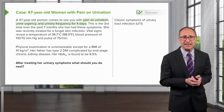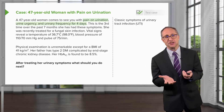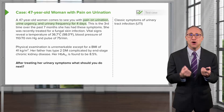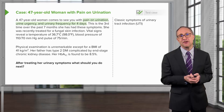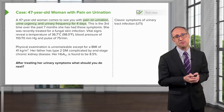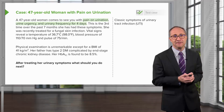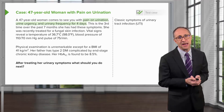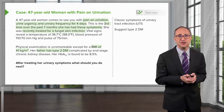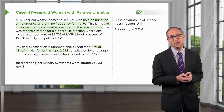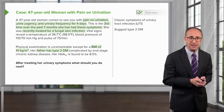In reviewing this case, she has frequent infections, a positive family history for type 2 diabetes, a very elevated body mass index, and an elevated hemoglobin A1c. All these features are suggestive of a new diagnosis of type 2 diabetes.